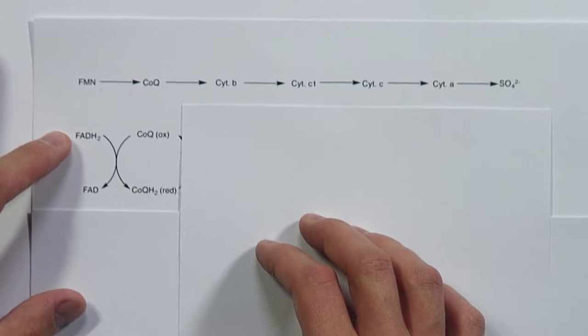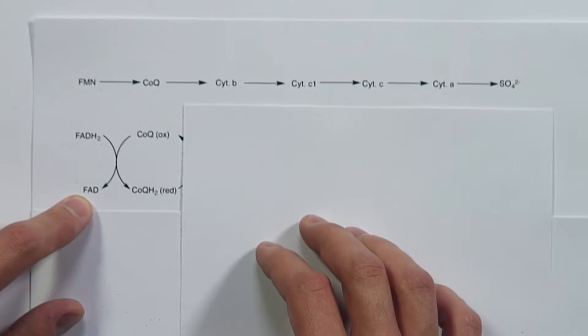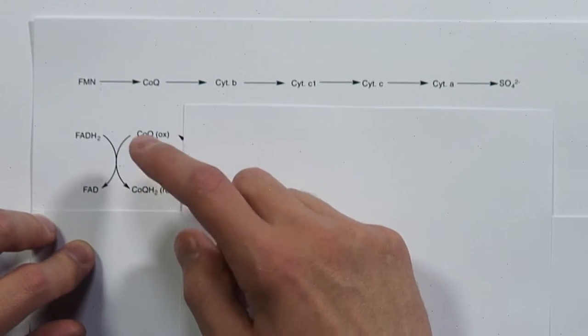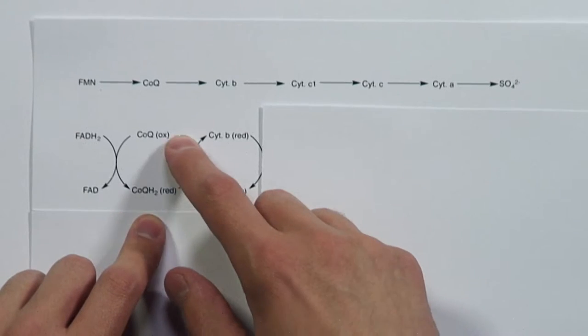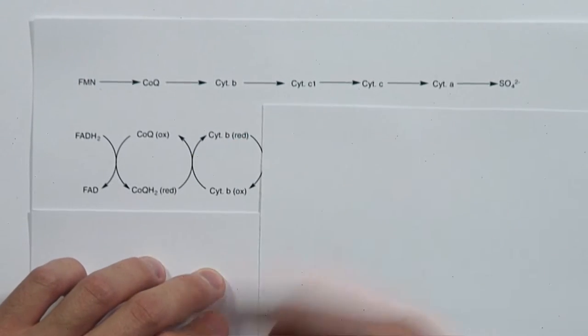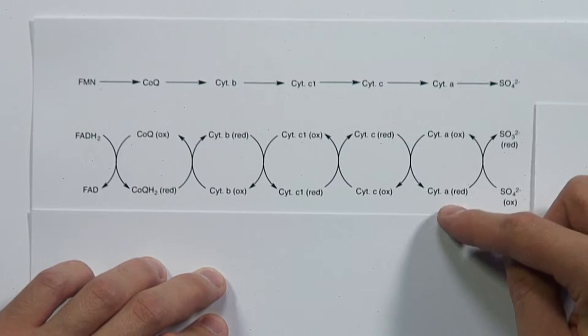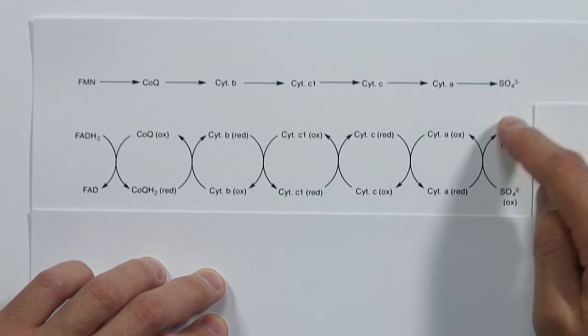Let's take a closer look at how electrons are transferred through this proposed electron transport chain. In the first reaction, FADH2 (the reduced version of flavin adenine dinucleotide) is converted to oxidized FAD, and in this redox reaction we use the oxidized form of coenzyme Q and reduce it in the process. So electrons get transferred from FADH2 to coenzyme Q. In the next reaction, reduced coenzyme Q gets oxidized back, and cytochrome B goes from its oxidized to its reduced form. This process continues with every electron carrier up until sulfate, where reduced cytochrome A donates its electrons to sulfate, which gets reduced to sulfite.